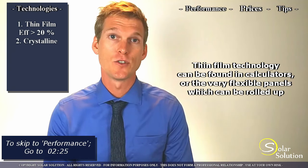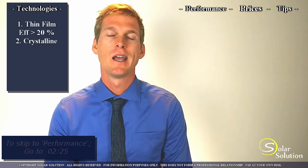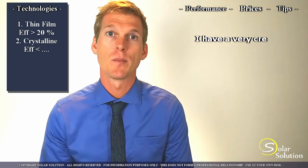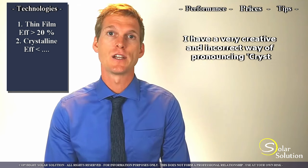The second type is a crystalline cell, includes both mono and polycrystalline and this is the kind of technology that is most commonly used in off-grid and on-grid solar energy applications.